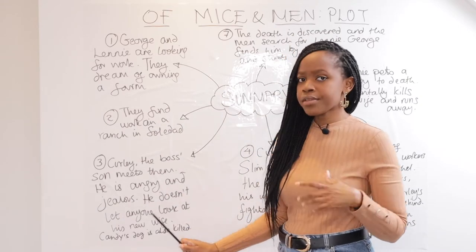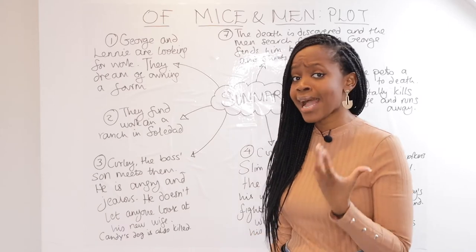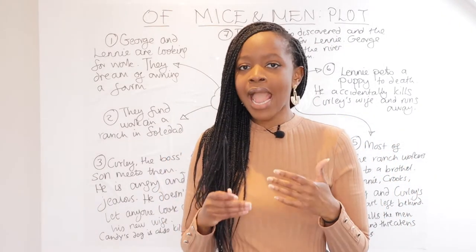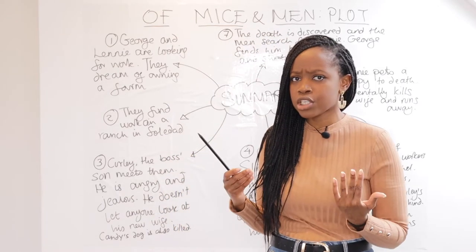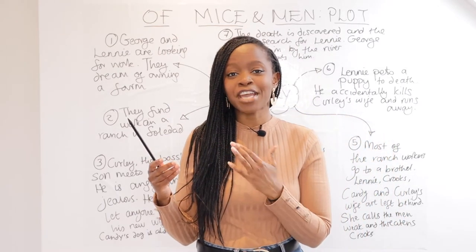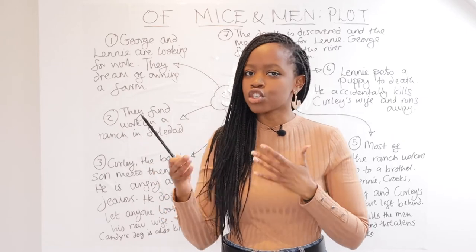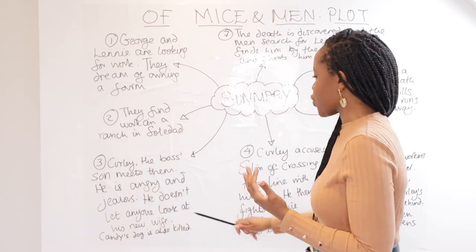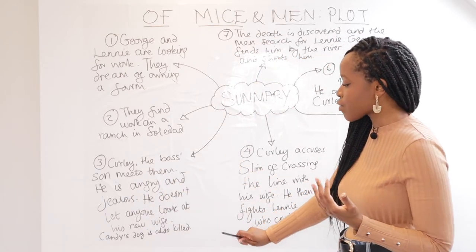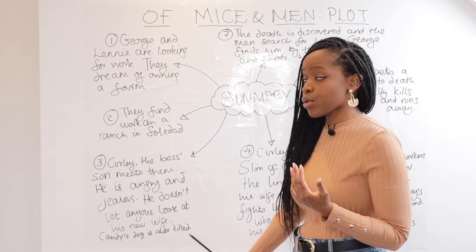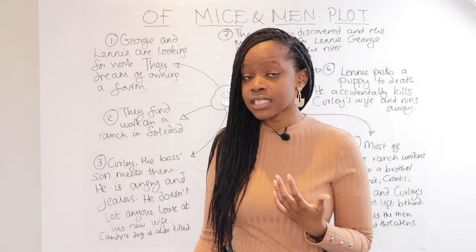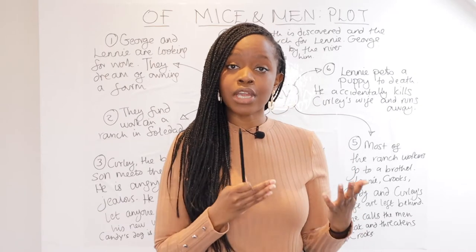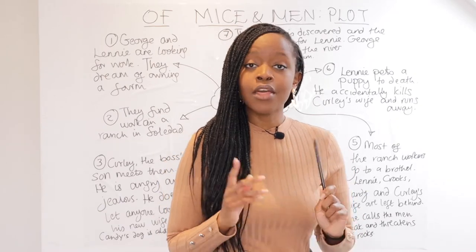We learn that Curly is very angry and quite jealous. He has a new wife — known only as Curly's wife, as we never learn her real name — and he's very jealously protective of her. He doesn't want any of the men to look at her, which is a problem because she loves attention. Also during this section, Candy, one of the older ranch workers, has his old dog killed by Carlson.